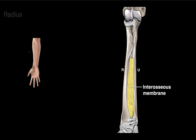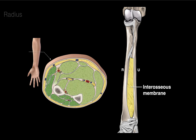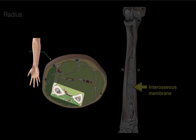If we take a cross-section through the forearm and focus in this area, there's the radius and ulna, and the interosseous membrane is between the two. Anatomists use this landmark to describe structures like the anterior interosseous and posterior interosseous arteries and nerves in their relation to in front of or behind this membrane.